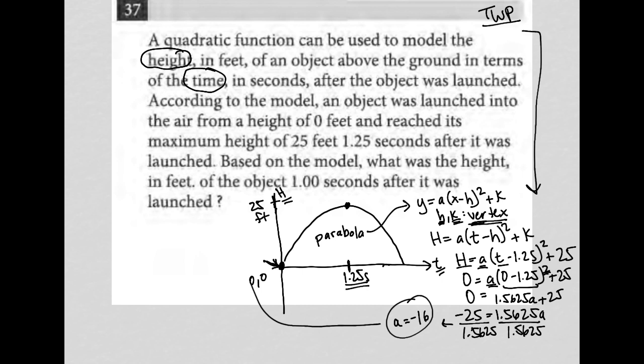All that being said, it's a lot of math on this question, I can rewrite this as h equals negative 16, because we found a, t minus 1.25, because that is always the x value of the vertex, plus 25, because that is always the y value of the vertex.